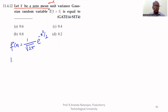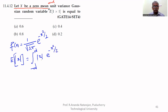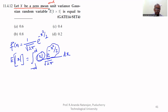Therefore, the expectation of modulus of x — which is what is required — equals the integral from minus infinity to plus infinity of modulus of x times e to the power of minus x squared over 2, divided by root 2 pi, dx. This is an even function.